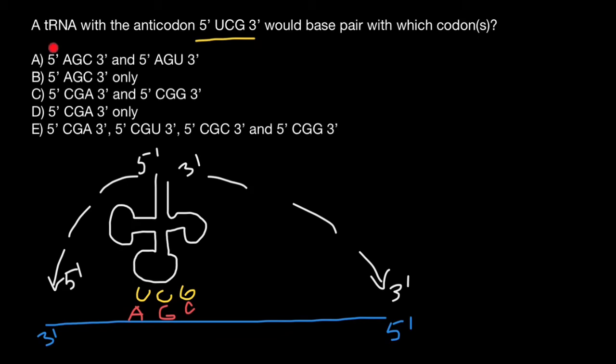As you see, all answers start with five prime end. So when we give an answer, we also start with five prime end and go to the direction of the three prime end. CGA is going to be our sequence, but it's not going to be the full answer.